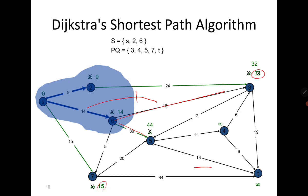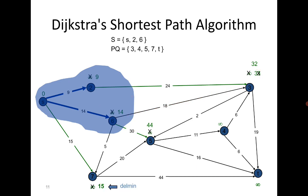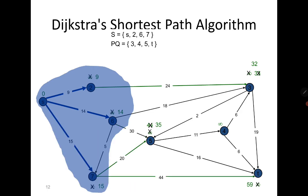We move from s to vertex 7. From vertex 7, t is reachable, and the distance 44 can be updated because 15 plus 20 is 35. So that gets updated to 35, and we reached t with distance 59. Among 32, 35, and 59, the minimum is 32.